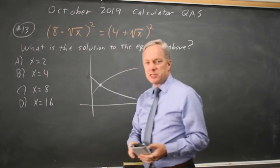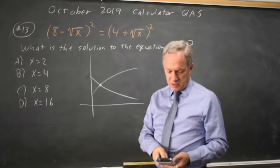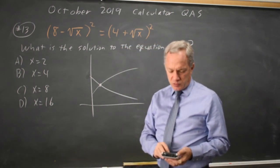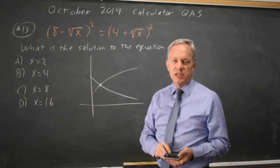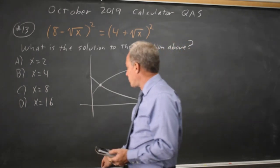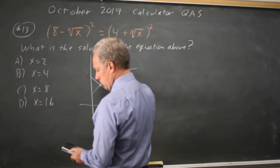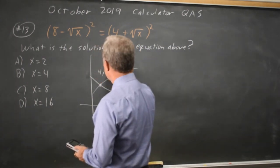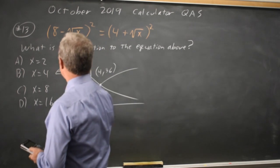If I find the coordinates at the point of intersection, second calc, intersect, hit enter three times, and it says x equals 4, y equals 36, so the correct answer would be 4.